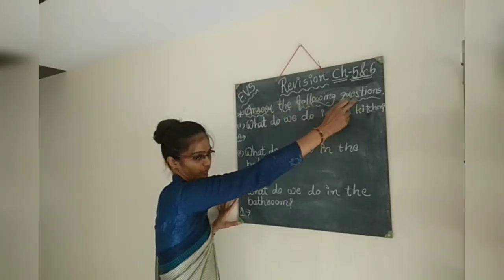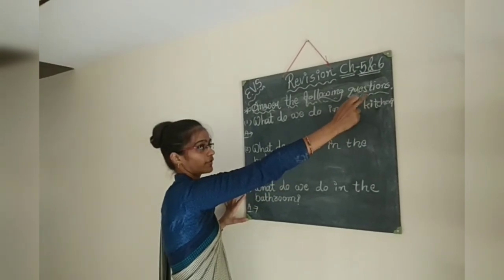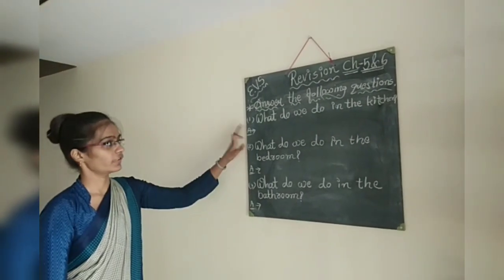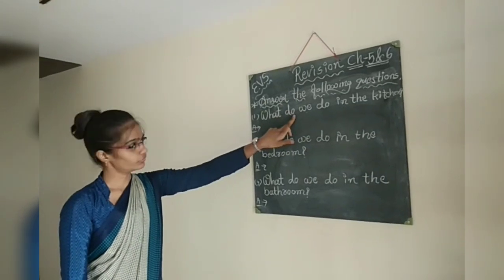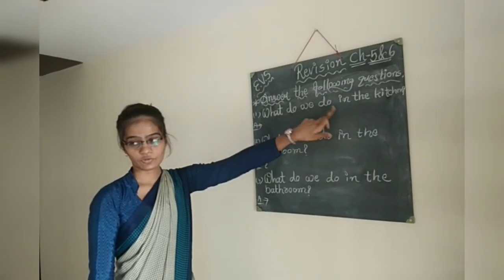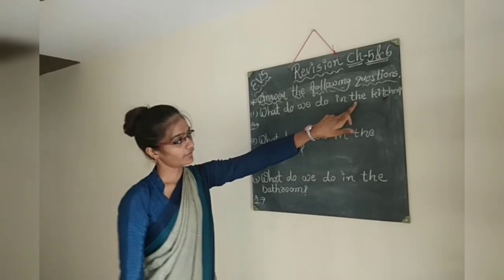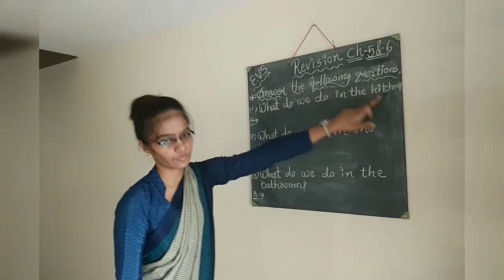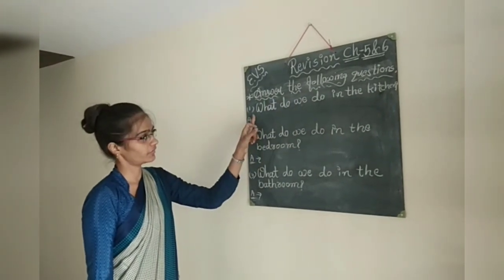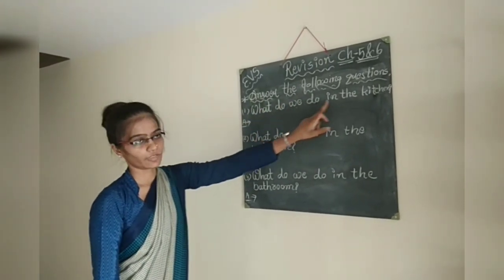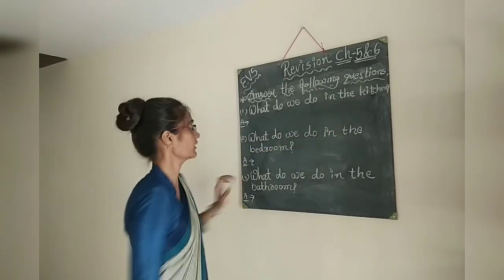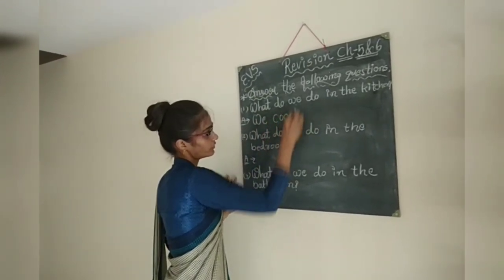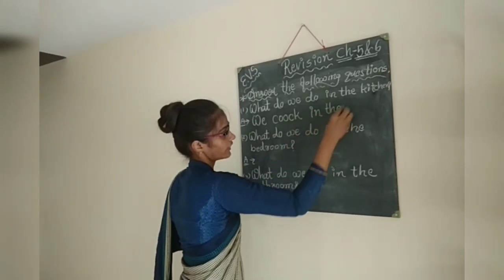Answer the following questions. All of you have to write the answer in a full sentence. Question number 1: What do we do in the kitchen? The answer is: We cook in the kitchen.